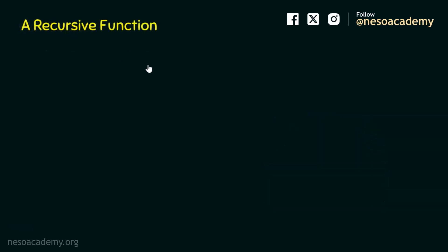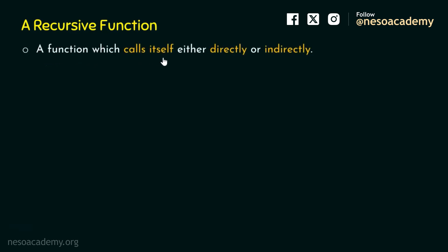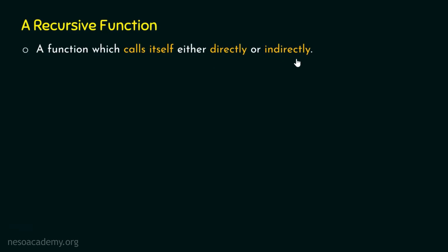What is a recursive function? A recursive function is a function which calls itself either directly or indirectly. It is different from a normal function because of this self-calling behavior. There are two ways in which a recursive function can call itself: either it can call itself directly, or it can call itself indirectly.